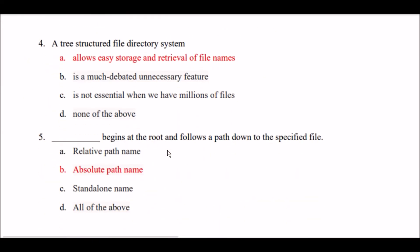Next question: A tree-structured file directory system — Option A: allows easy storage and retrieval of file names. Option B: is a much debated unnecessary feature. Option C: is not essential when we have plans of files. Option D: all of the above. The right answer is Option A — a tree-structured file directory system allows easy storage and retrieval of file names.